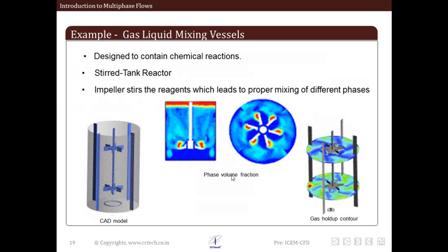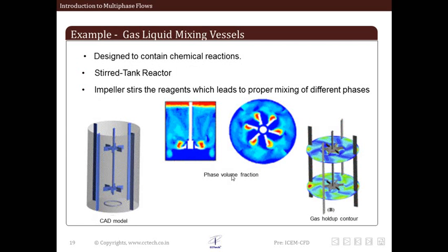The next example is a gas-liquid mixing vessel. As you can guess from the image, this is basically a mixing vessel in which mixing is carried out by rotation of impeller-type blades. This is also used for chemical reactions, enhancing the chemical reaction by the rotating action or the mixing action of the rotary blades or impellers.